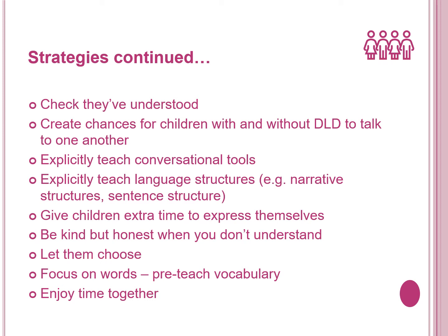Create chances for children with and without DLD to talk to one another. Explicitly teach conversational tools if this is an area they find difficult. Explicitly teach language structures, for example narrative structures or sentence structures. Give children extra time to express themselves. Be kind but honest when you don't understand. If they're finding it difficult, give them a choice between two options. Pre-teach new vocabulary, explaining the meaning of the new words and using them often in activities. And finally, enjoy time together — model language when you play and interact, practise taking turns and listening to each other, and have fun communicating.